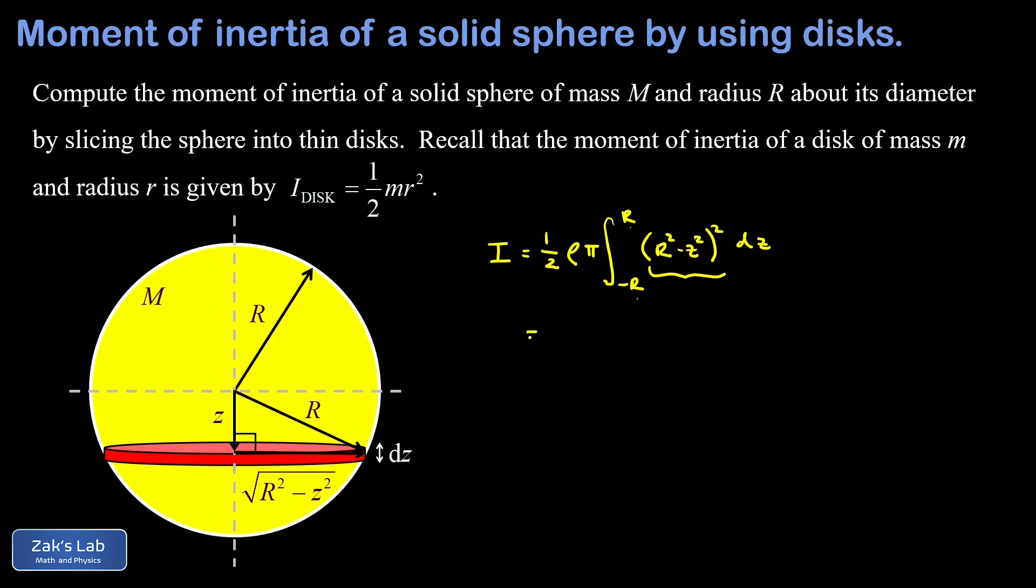This means we can cut the integral in half and just integrate starting at zero and then double the result. In the next step I'm going to take care of that and I'm going to expand this squared binomial. The factor of two from cutting the integration interval in half is going to cancel the one half out in front. So that's gone. And I have rho pi.